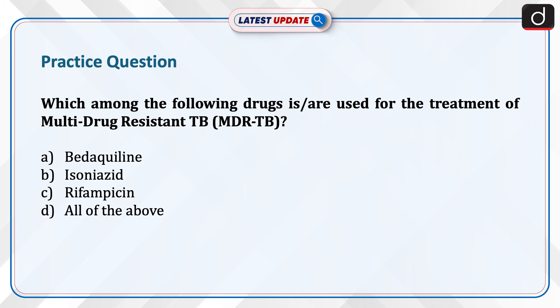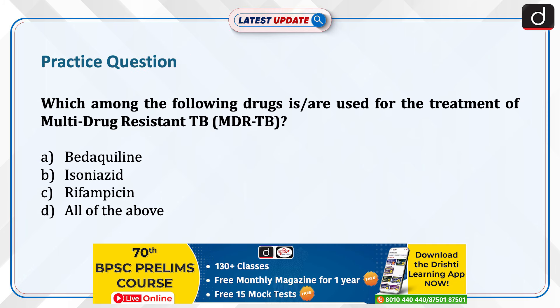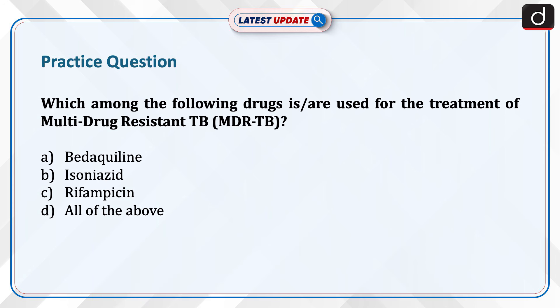Now it is time for a practice question. Which among the following drugs is or are used for the treatment of multi-drug resistant TB, that is MDR-TB: Bedaquiline, Isoniazid, Rifampicin, or all of the above? Send the answer to this question in the comment section.